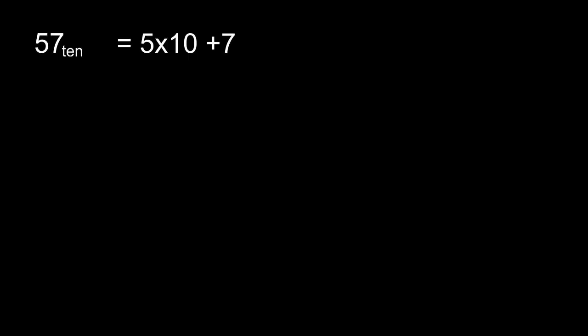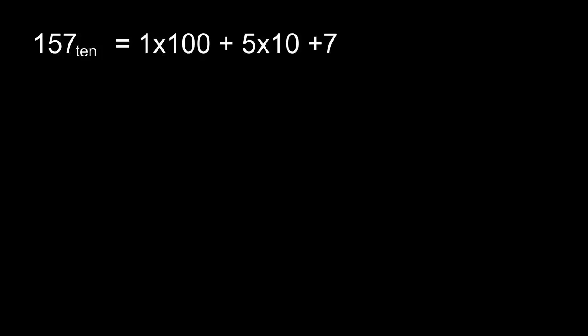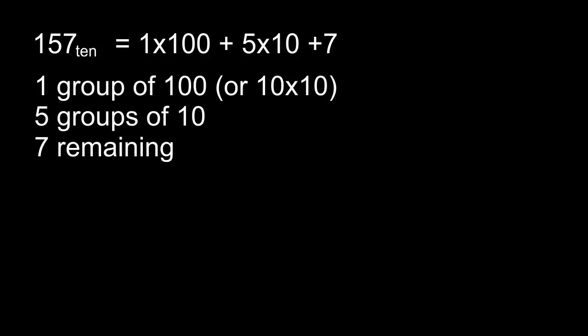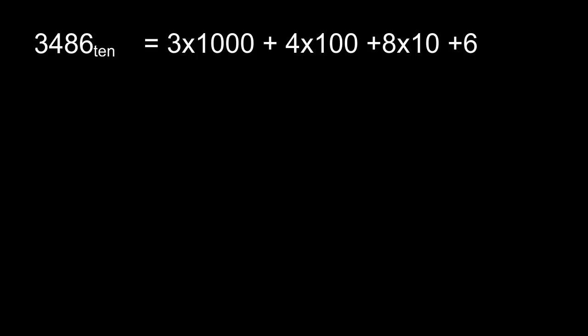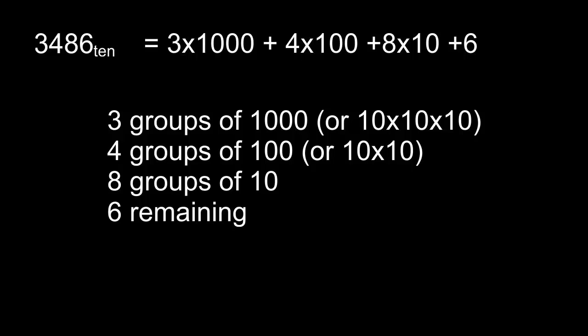Fifty-seven in base ten — we know this is fifty plus seven, or five lots of ten plus seven. A hundred and fifty-seven in base ten is one hundred plus fifty plus seven: that's one lot of a hundred, five lots of ten and a seven. An even bigger number: three thousand four hundred and eighty-six in base ten. That's three lots of a thousand, four lots of a hundred, eight lots of ten and six left over. We're all pretty familiar with writing numbers in base ten, or in our decimal system.